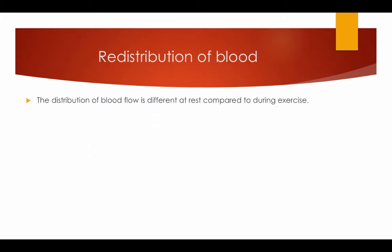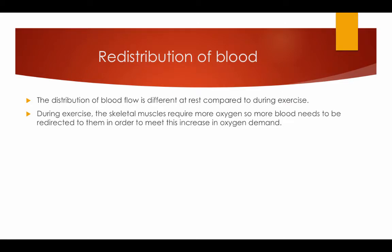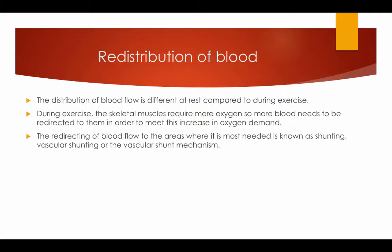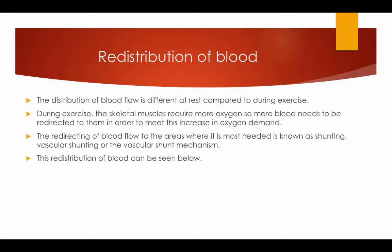Redistribution of blood. The distribution of blood flow is different at rest compared to during exercise. During exercise the skeletal muscles require more oxygen, so more blood needs to be redirected to them in order to meet the increase in oxygen demand. The redirecting of blood flow to the areas where it is most needed is known as shunting, vascular shunting, or the vascular shunt mechanism.